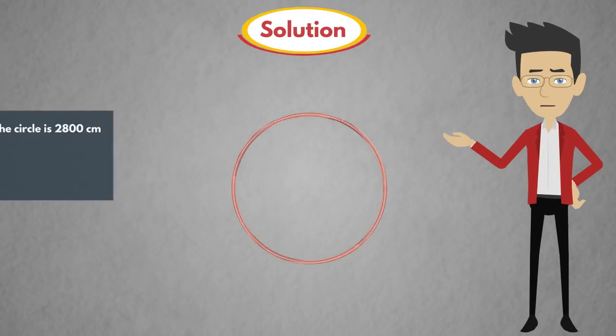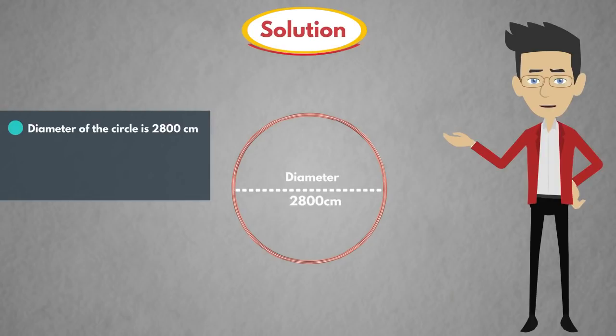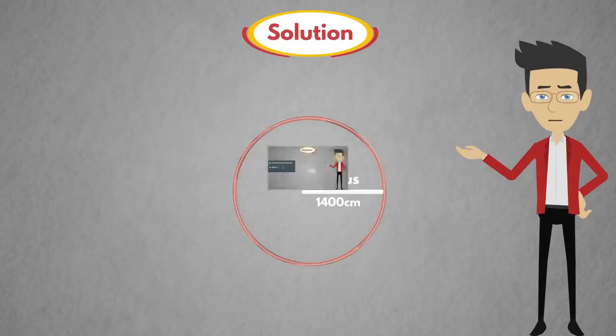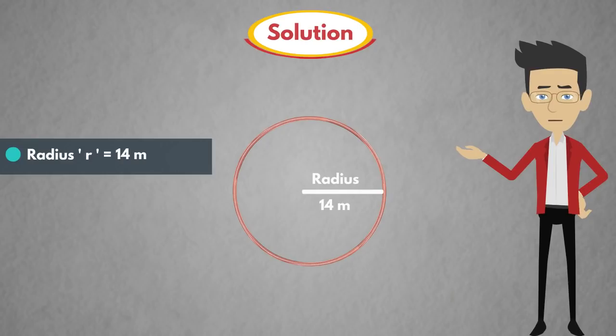In the question given, diameter of a circle is 2800 cm. Radius r is equal to half of the diameter. So, radius r is equal to 1400. Convert cm into m: 1400 by 100 is equal to 14 m. Radius r is equal to 14 m.